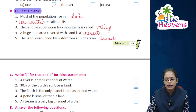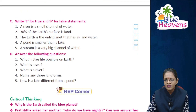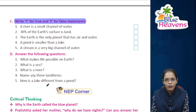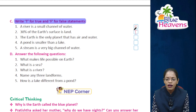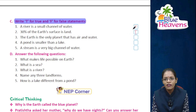Exercise C — write T for true and F for false. A river is a small channel of water: False (that is a stream). 30% of the Earth's surface is land: True. The Earth is the only planet that has air and water: True. A pond is smaller than a lake: True. A stream is a very big channel of water: False.